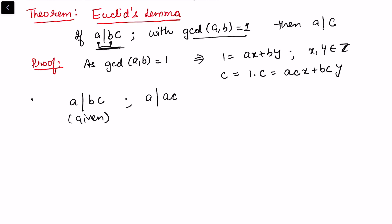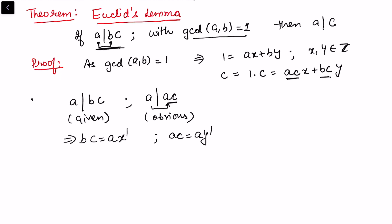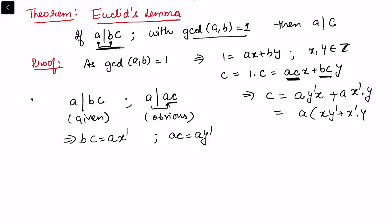We know a divides bc (given) and a divides ac (since ac is a multiple of a). So a divides ac and a divides bc. Writing bc = a·x' and ac = a·y' and substituting into c = acx + bcy, we get c = a·y'·x + a·x'·y = a(xy' + x'y). Since (xy' + x'y) is an integer, this shows a divides c, which completes the proof of Euclid's Lemma.